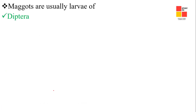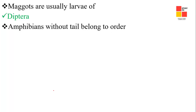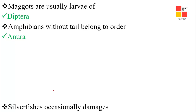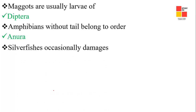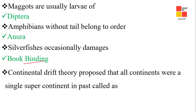Next one: maggots are usually the larvae of flies. Next one: amphibians without tails belong to the order Anura. Next one: silverfish occasionally damages book bindings.